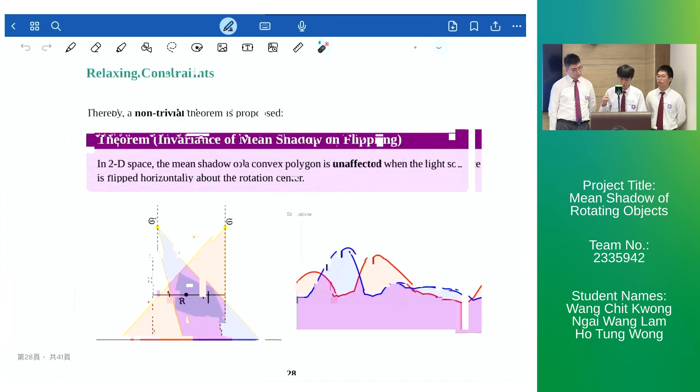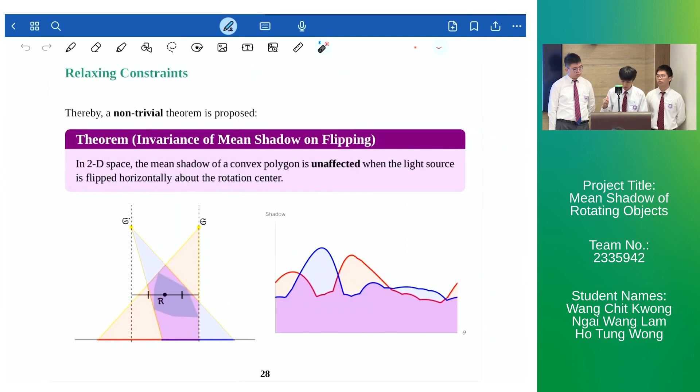For that reason we propose the following non-trivial theorem on the invariance of mean shadow on flipping light sources about rotation centers. As demonstrated by the two curves on the right, as the object rotates at a certain angle of rotation the shadow clearly differs as indicated by the two distinct curves. However the overall shadow which is represented by the area under the curves are actually identical.